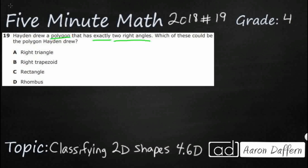So we've got a polygon, so let's label that right here. A polygon is a closed shape — means no openings — and it's got all straight lines, no curves. So circles are not polygons. That is going to be shapes like triangle, square, hexagon, octagon, decagon.